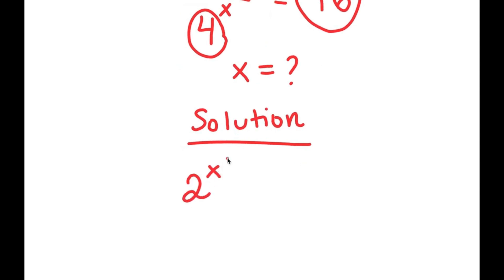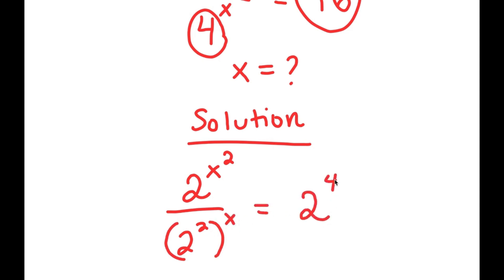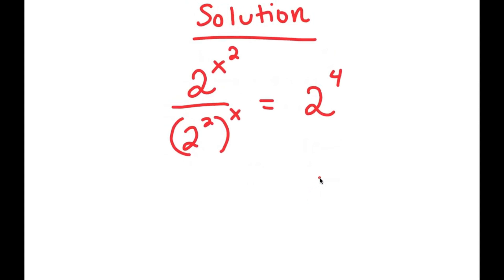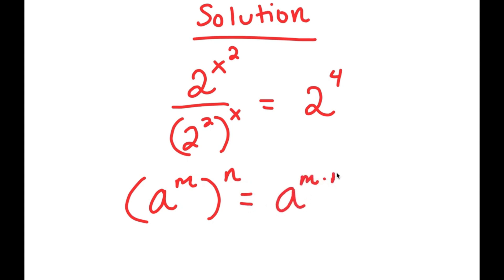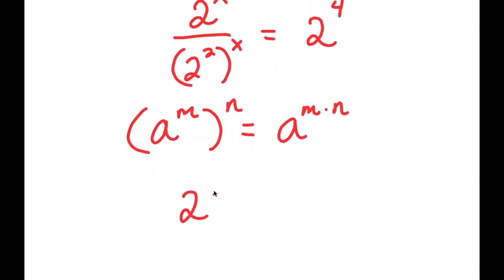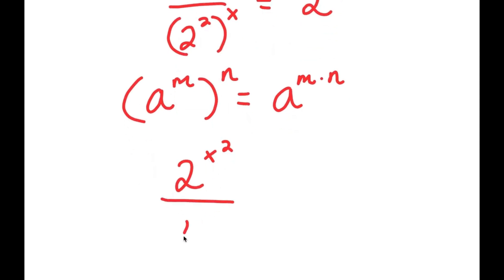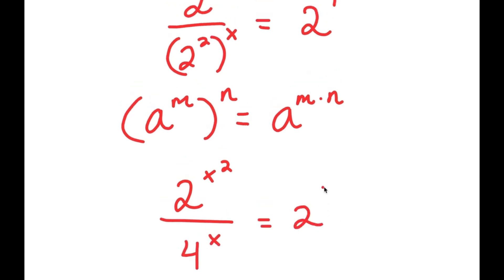So I get 2 to the power of x squared over 2 squared to the power of x is equal to 2 to the power of 4. Now from here, if I have something in the form a to the power of m to the power of n, this is equal to a to the power of m times n. So 2 squared to the power of x I can rewrite as 2 to the power of 2x, which is equal to 2 to the power of 4.